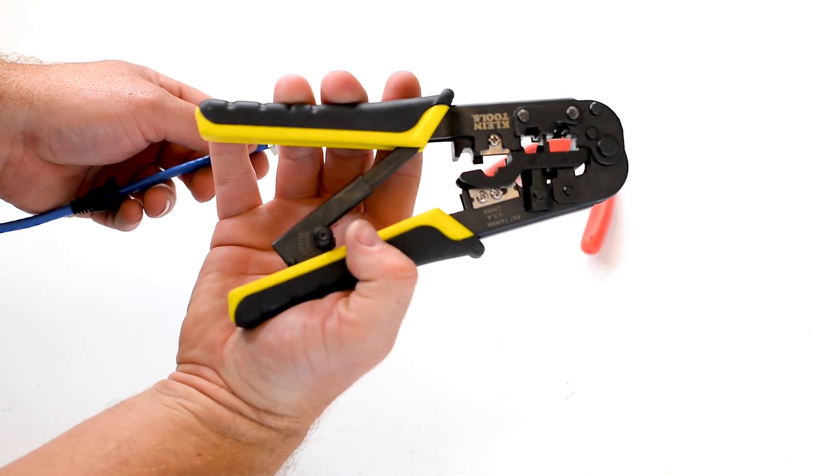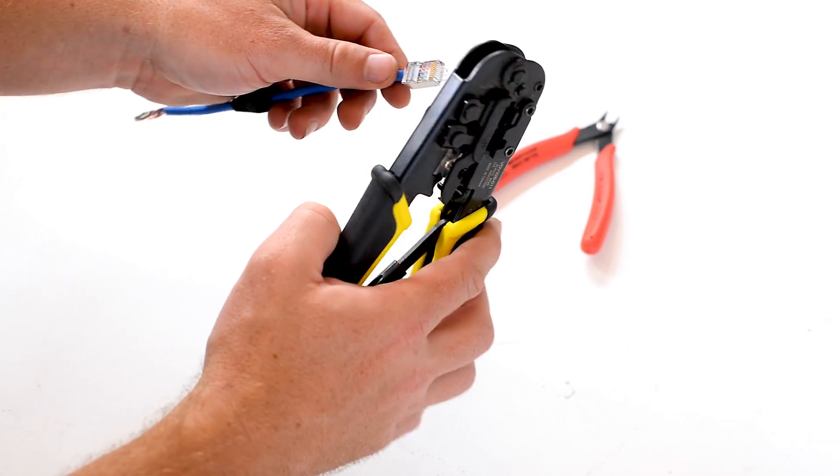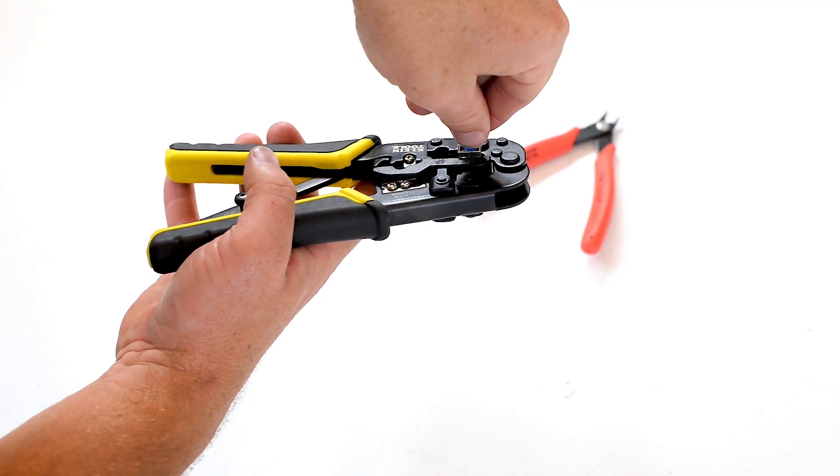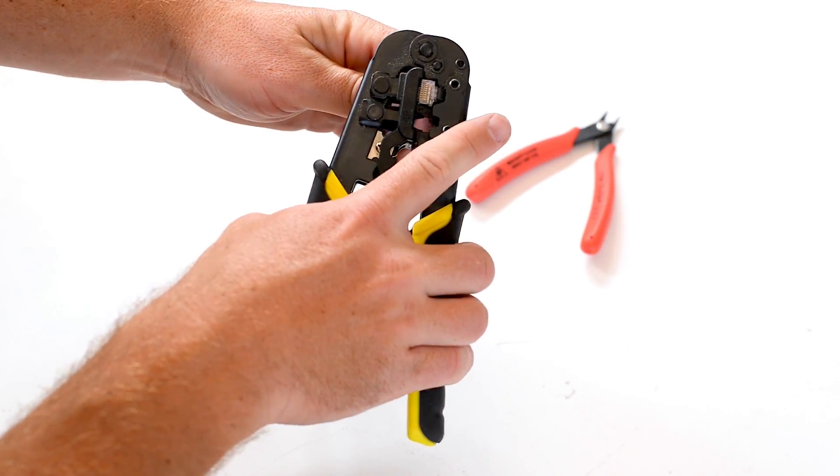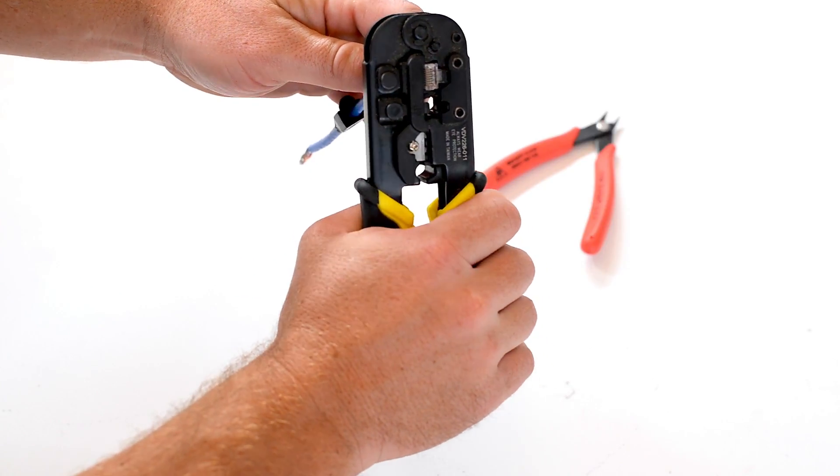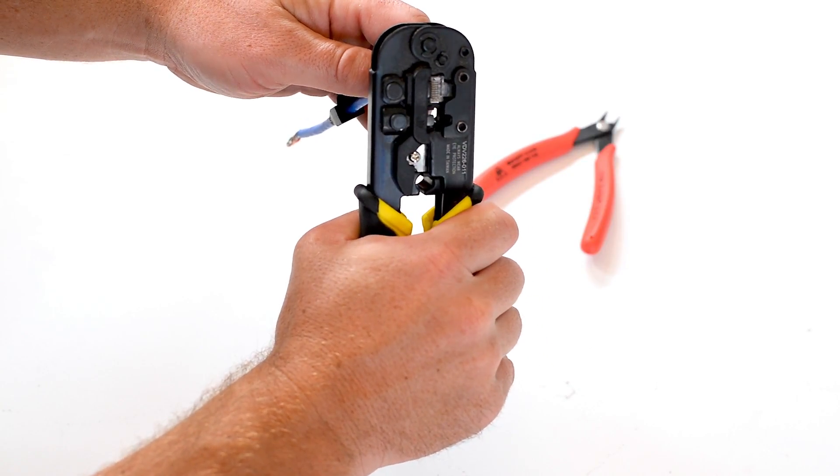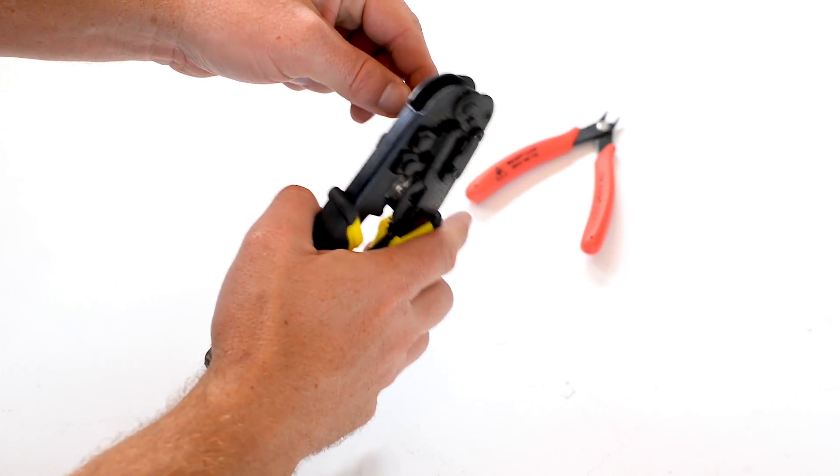I am going to then take my crimper which is designed for an 8 pin RJ45 crimp. I am going to place my RJ45 connector in making sure that the wire is firmly pushed. And then I am going to crimp firmly down making sure that I get a nice solid crimp on that connector.